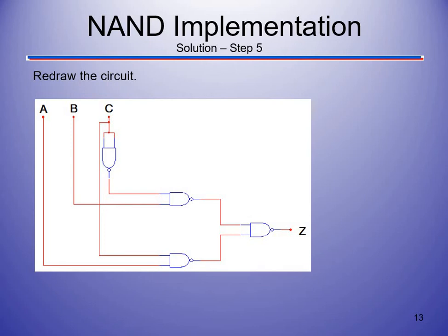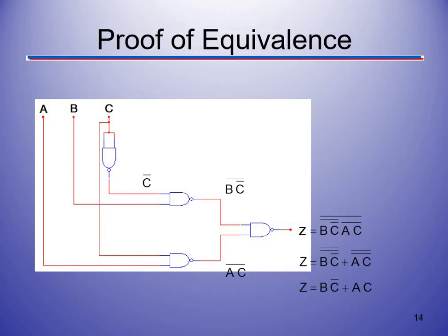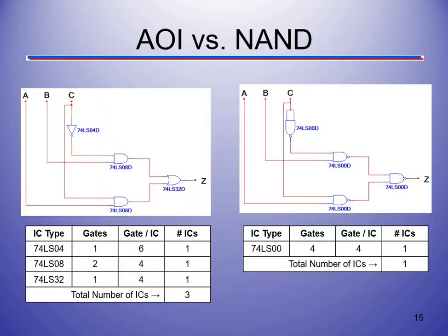This gives us the NAND equivalent of the original circuit, which just saved us a lot of money. When doing your designs, write out in text what's coming out of each gate so you understand what's happening — it will really make a big difference.